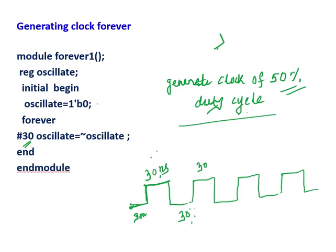If somewhere you are asked to generate a clock with a 50% duty cycle, then you can write this code and you will get this waveform. If you want 40 nanoseconds - on time 40 nanoseconds, off time 40 nanoseconds - you just change it here to 40. If you want 50, just change it to 50. If it is 100, change it to 100. You can also change your signal name, because this is a user-defined signal - it can be A, B, clock, or whatever you want.